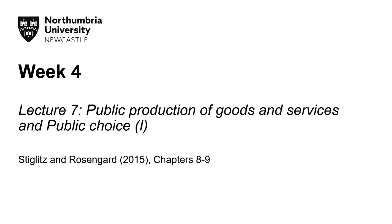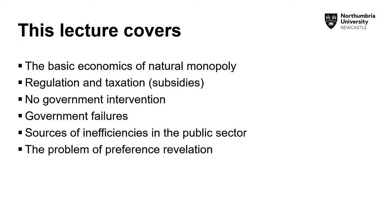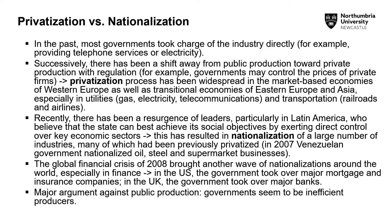Good morning students. Today we continue with lecture seven followed by lecture eight, for week four. What we will be covering is public production of goods and services and public choice. The readings are Stiglitz and Rosengard chapters eight to nine. We will discuss the basic economics of natural monopoly, regulation, taxation, subsidies, what happens with no government intervention, sources of inefficiency in the public sector, and the problem of preference revelation.